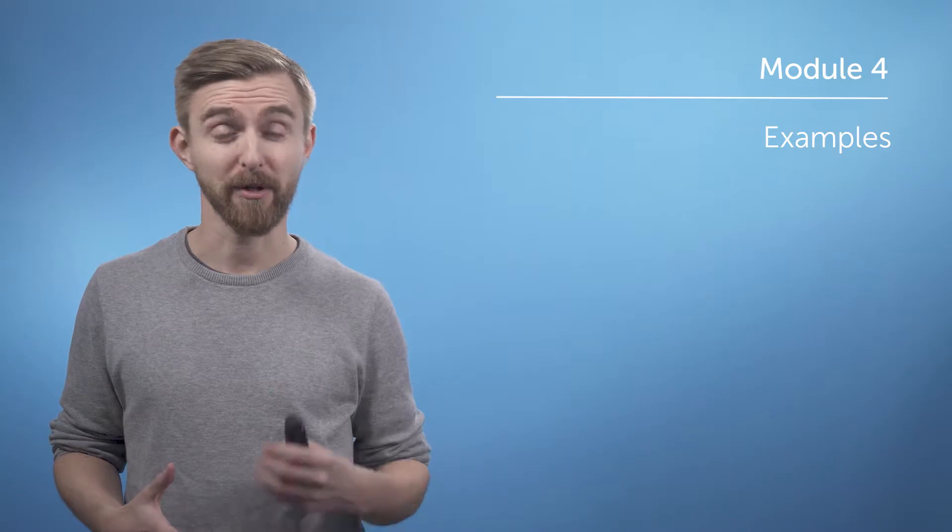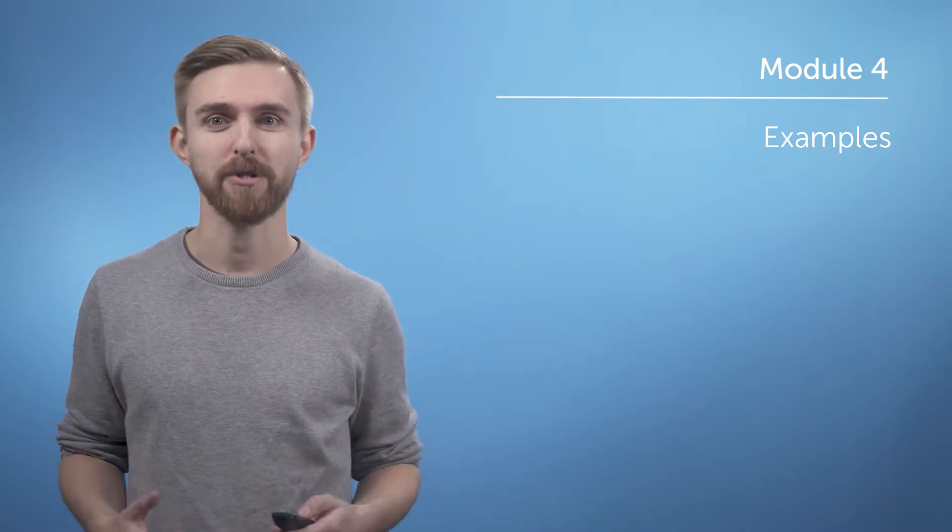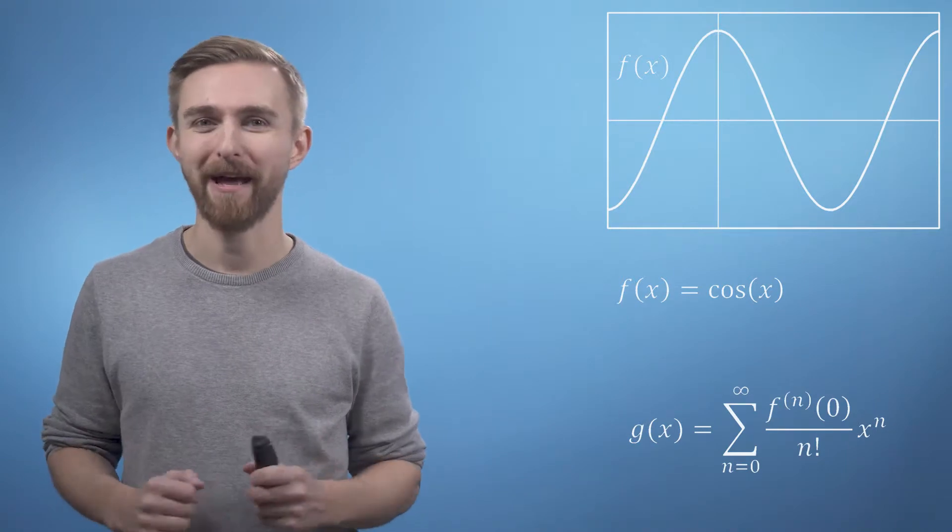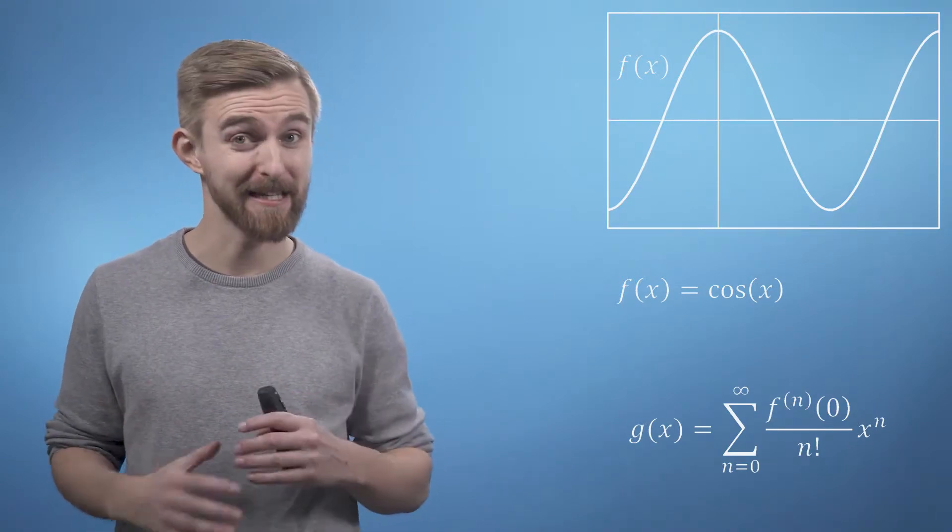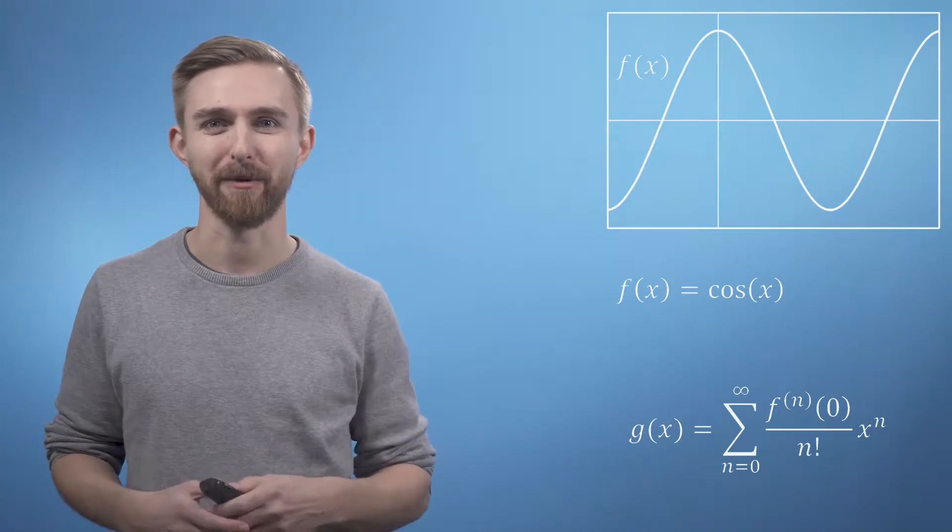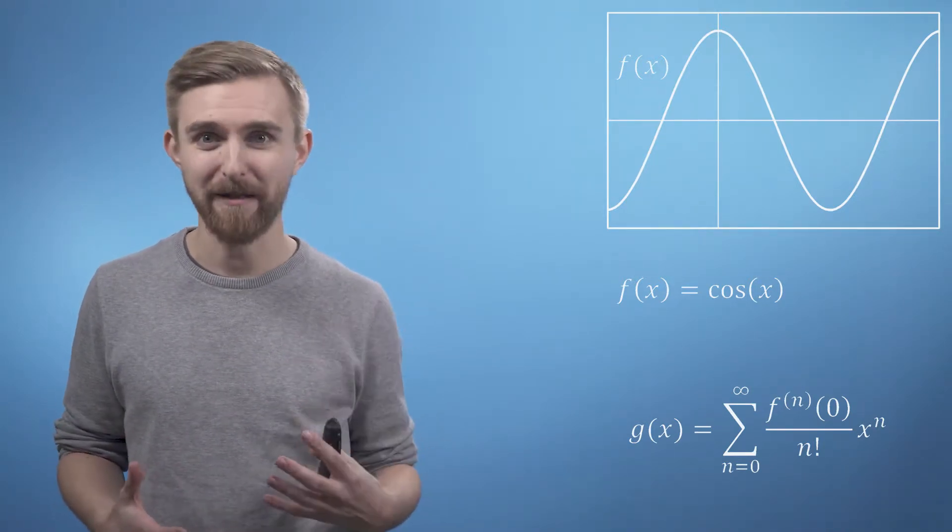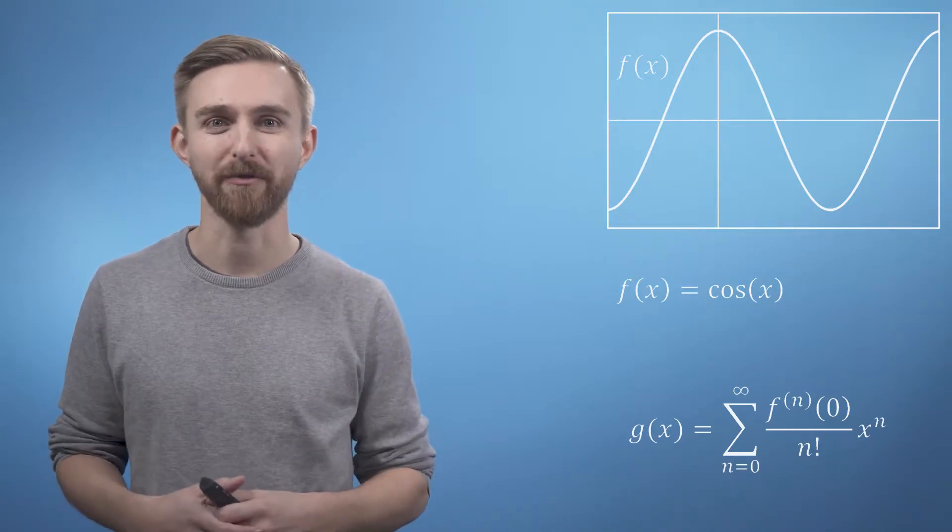First off we're going to build a Maclaurin series expansion of the cosine function. Cosine is the epitome of a well-behaved function as it is certainly continuous everywhere as well as being infinitely differentiable. As we're building a Maclaurin series we're going to want to find out everything about the function at the point x equals zero.